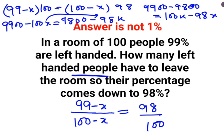Which can be written as 100X. 9900 minus 9800 is 100 is equal to 100X minus 98X is just 2X.